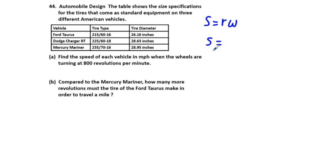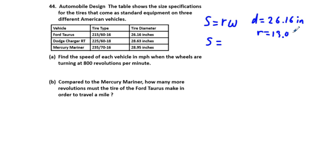The speed equals the radius times omega. For this Ford Taurus, the diameter is 26.16 inches, so the radius is one half of 26.16 inches, which is 13.08 inches — since 26 divided by 2 is 13, and 0.16 divided by 2 is 0.08.